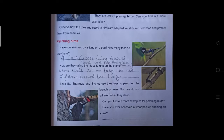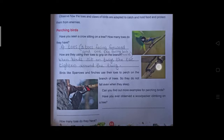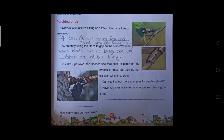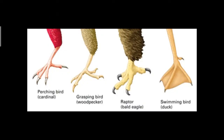Can you find more examples of perching birds? Have you observed a woodpecker climbing on a tree? How many toes does a woodpecker have? There are four toes. Observe the second picture — two toes are facing forward and two toes are facing backward, so they can balance. For a perching bird, three toes face front and one faces back.